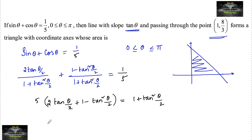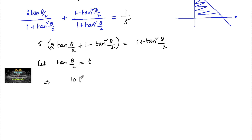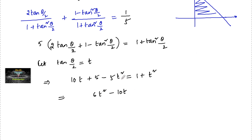Let t = tan(θ/2) for convenience. Expanding, we get 10t + 5 − 5t² = 1 + t², which simplifies to 6t² − 10t − 4 = 0, or equivalently 3t² − 5t − 2 = 0.